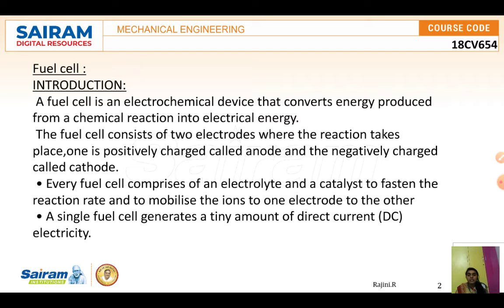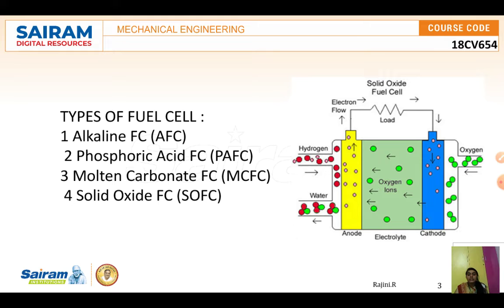These cells can consistently generate electricity until the supply of fuel and oxygen is cut off. Every fuel cell comprises an electrolyte and a catalyst to speed up the reaction rate. A single fuel cell can generate a small amount of DC electricity. The types of fuel cells are: alkaline fuel cells, phosphoric fuel cells, molten carbonate fuel cells, and solid oxide fuel cells.